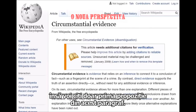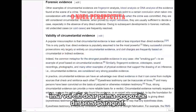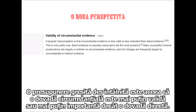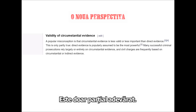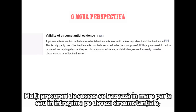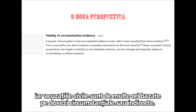I just wanted to read the first sentence of this paragraph. It says: a popular misconception is that circumstantial evidence is less valid or less important than direct evidence. This is only partly true. Direct evidence is popularly assumed to be the most powerful, yet many successful criminal prosecutors rely largely or entirely on circumstantial evidence, and civil charges are frequently based on circumstantial or indirect evidence.